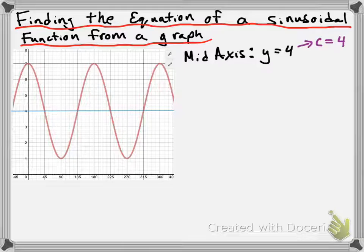Now that we have the middle axis in, it's actually not too hard to figure out what the amplitude is. Our maximum value occurs 3 units above 4 at 7, and that means that our amplitude is going to be 3.